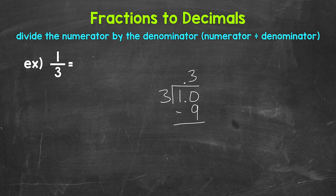Subtract. 10 minus 9 is 1. Now we don't have a clean zero at the bottom, so we need to continue on by using another 0 that we can bring down. So we have 10 again.